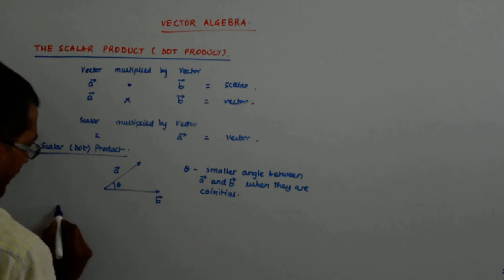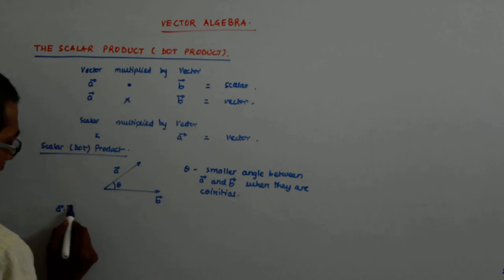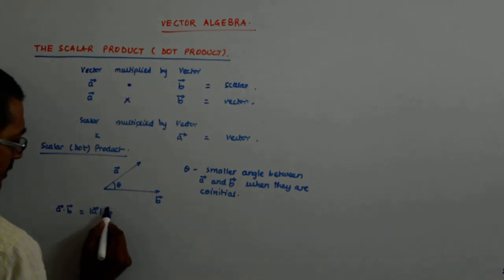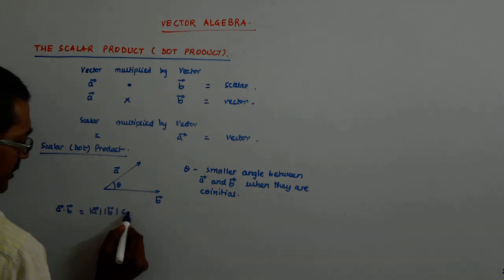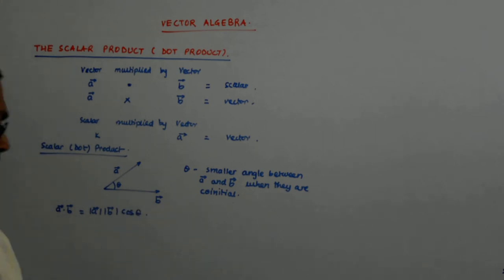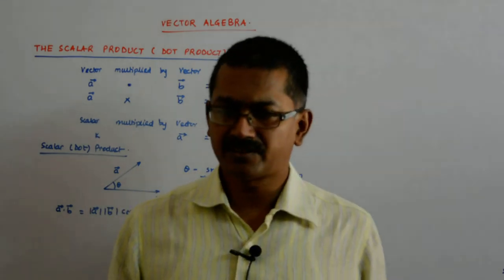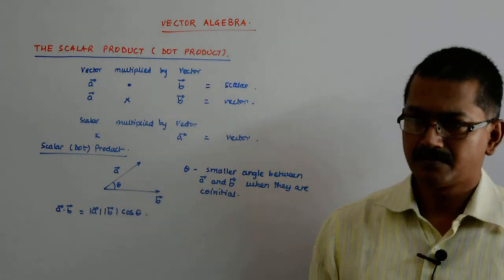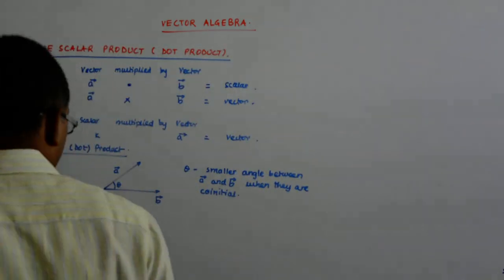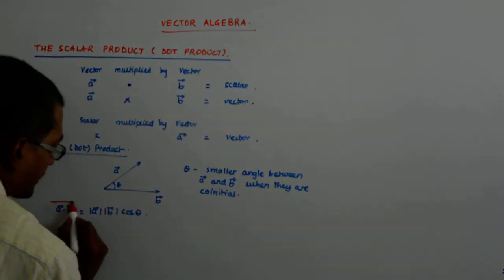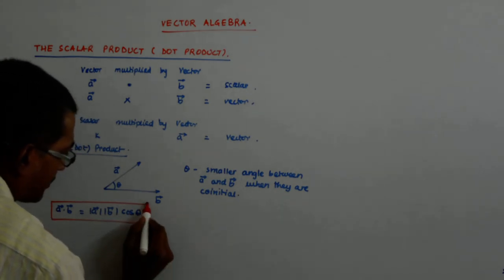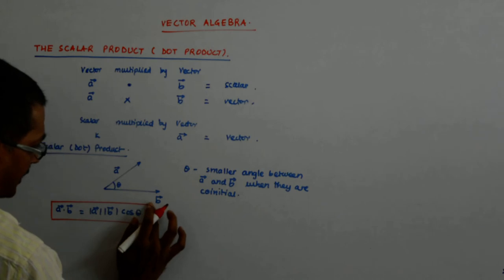Then you define a dot b as mod a into mod b into cos of that theta. You see mod a is a scalar, mod b is a scalar, cos theta is a scalar. So, our product is a scalar quantity. It is a scalar quantity.